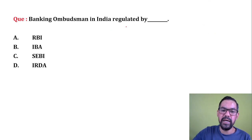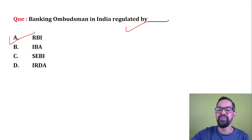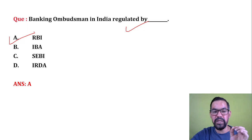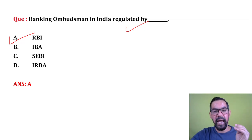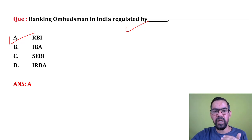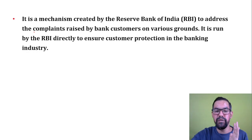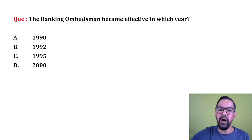Next question: Banking Ombudsman in India is regulated by whom? The answer is RBI. These are appointed and regulated by RBI as per Section 35A of Banking Regulation Act 1949.